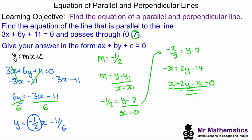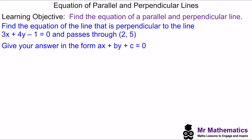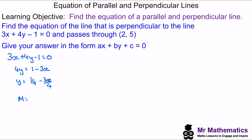Let's try another question. We've been given the equation of a line 3x plus 4y minus 1 equals 0, and we've been asked to work out the equation of a line that is perpendicular and passes through the point (2, 5). We'll begin by working out the gradient of this line, moving the 3x and the negative 1 to the other side and dividing both sides by 4. So the gradient m is negative 3 over 4, and the gradient of a perpendicular line will be the negative reciprocal of this, which is 4 thirds.